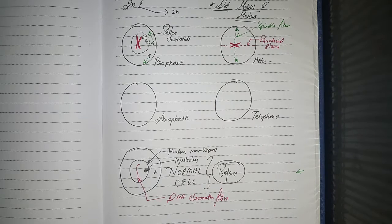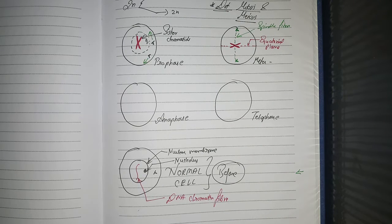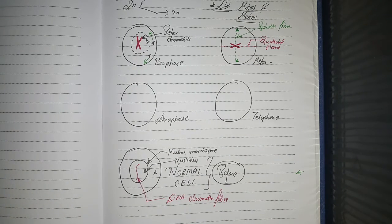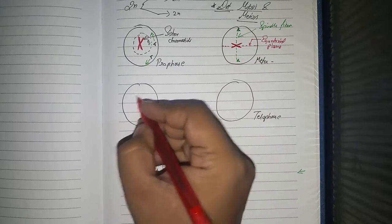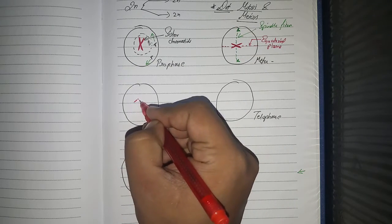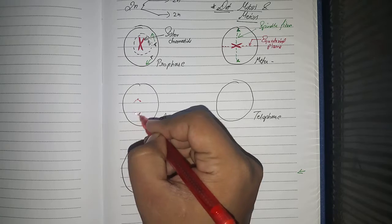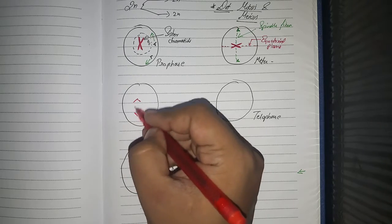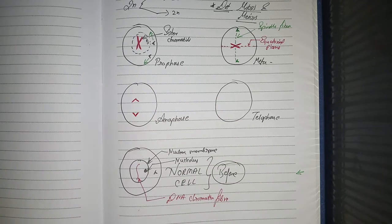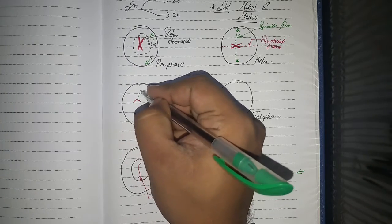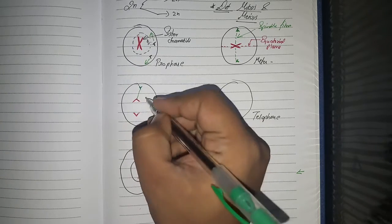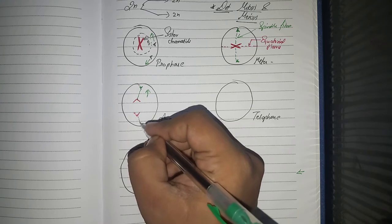These are spindle fibers, made up of flexible proteins. The next stage is anaphase. In anaphase, the centromere splits — so sometimes the chromosomes look like bananas — and the chromosomes move toward the poles.